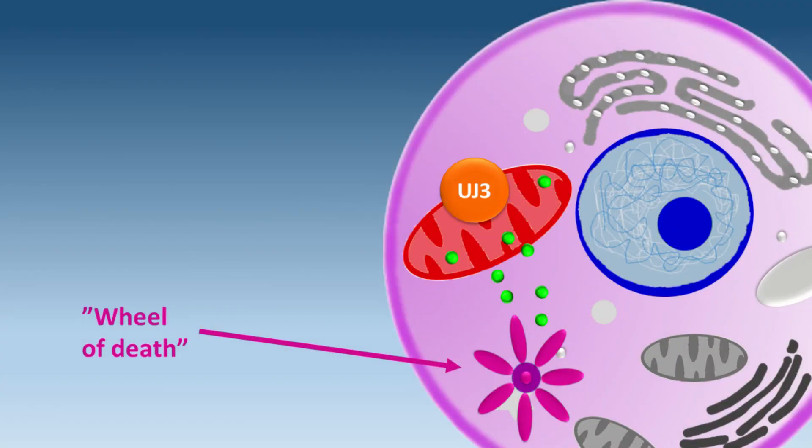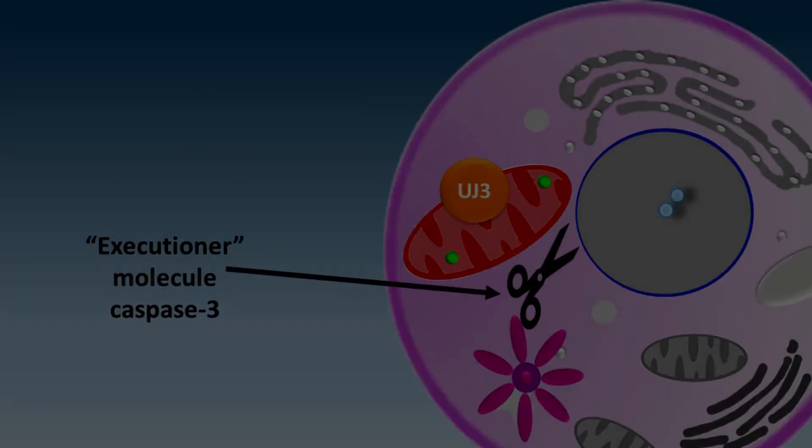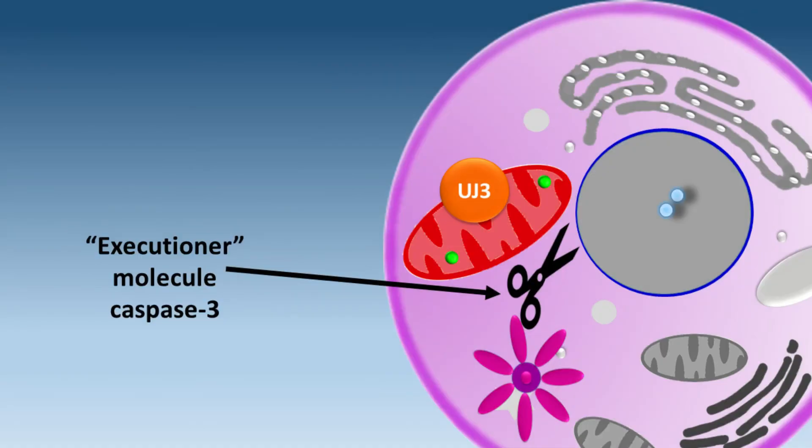Once cytochrome C is outside the mitochondria, it gangs up with other proteins in a complex biochemical process, which creates a wheel of death, shown as the purple daisy in the graphic. The wheel of death wakes up the sleeping executioner molecule of caspase-3. Caspase-3 goes to work by cutting up and activating other proteins that target the cell's command centre, the DNA inside the blue nucleus and the nucleolus as well.